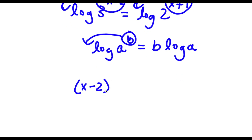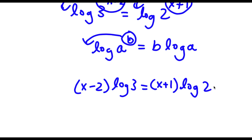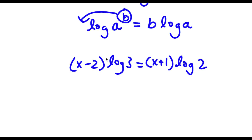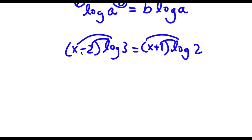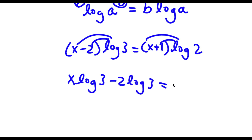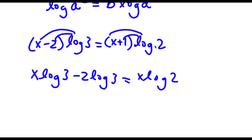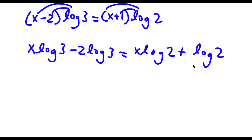So now I have x minus 2 times log 3 is equal to x plus 1 times log 2. Now if I distribute log 3 and log 2 — starting with x minus 2 times log 3 — x times log 3 is x log 3, and negative 2 times log 3 is negative 2 log 3. This equals x log 2 plus log 2. So now I have x log 3 minus 2 log 3 is equal to x log 2 plus log 2.